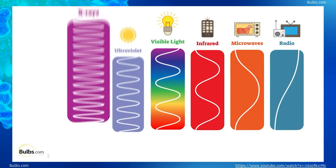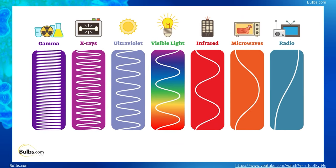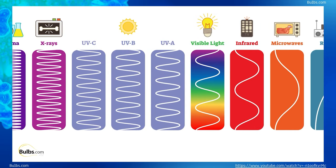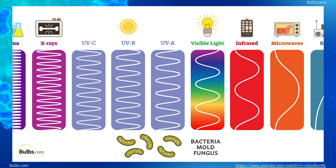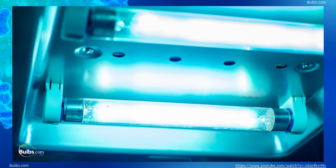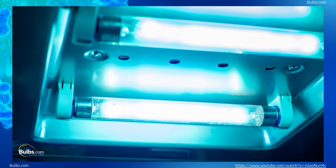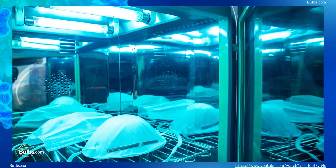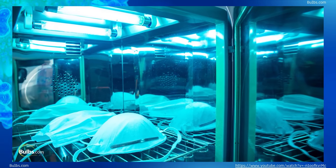Looking at the electromagnetic spectrum again and breaking out the three UV types: UVA and UVB can be used to kill bacteria, mold, and fungus. But what separates UVC apart is its ability to also kill viruses. UVC is the point where the wavelengths become short enough to disrupt the virus. UVC light is an excellent and powerful tool for disinfecting and killing bacteria and viruses, though its biggest limitation is that it only works in line of sight.